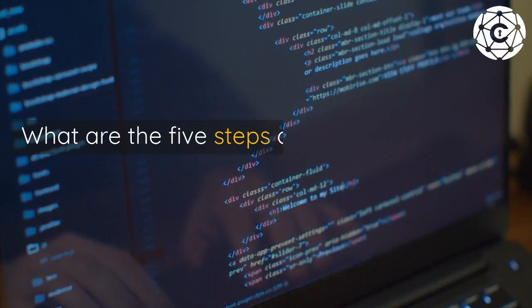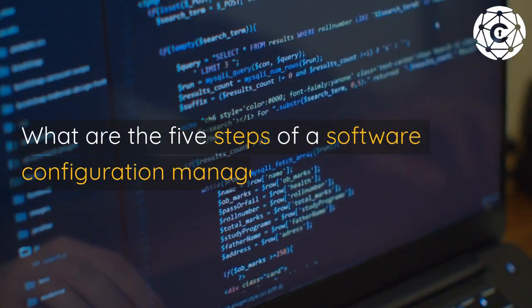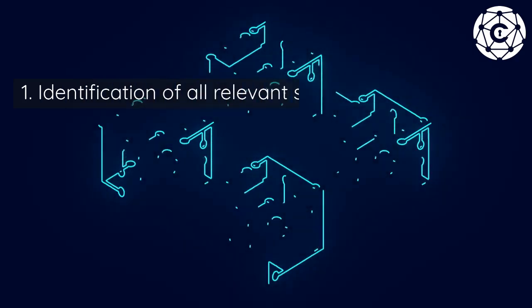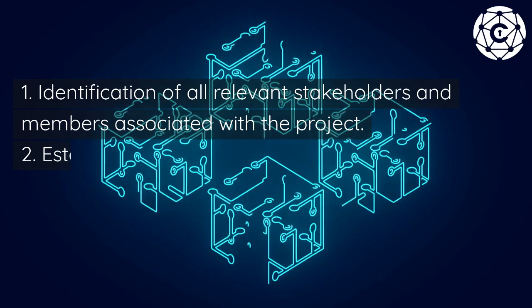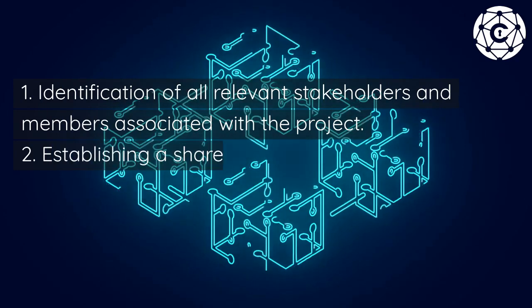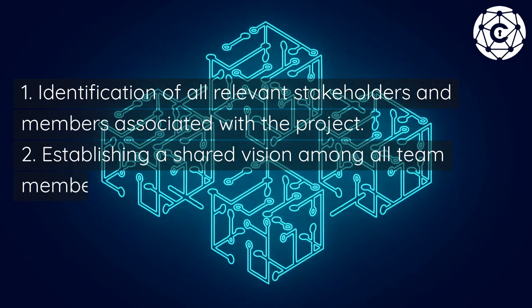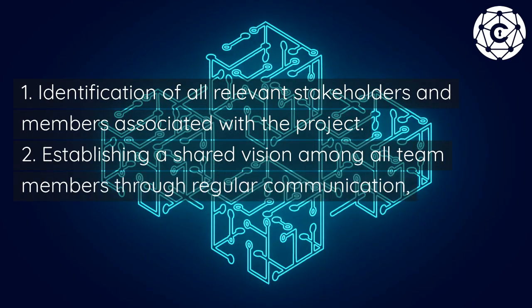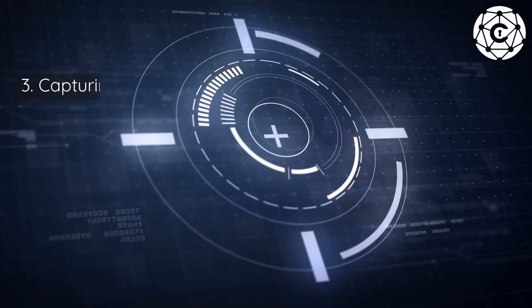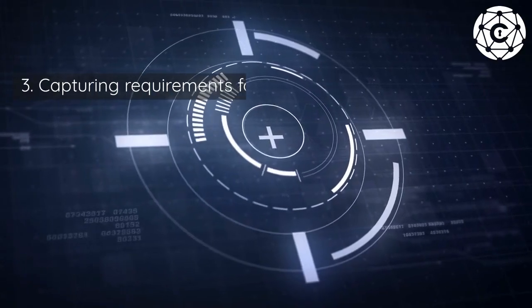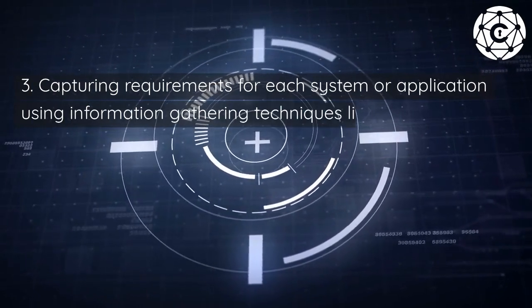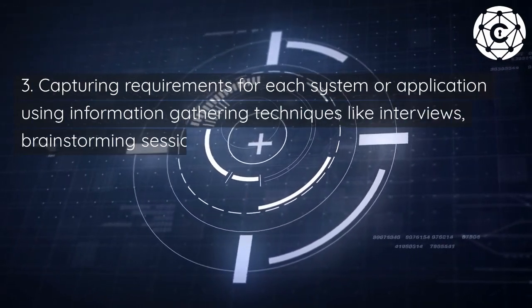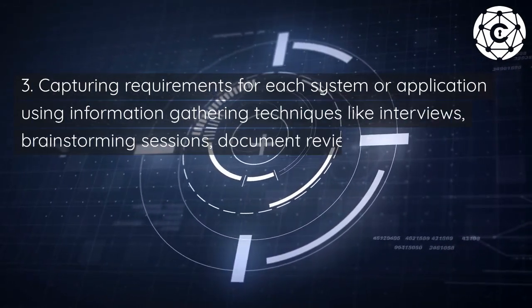What are the five steps of a software configuration management process? Step 1: Identification of all relevant stakeholders and members associated with the project. Step 2: Establishing a shared vision among all team members through regular communication, collaboration, etc. Step 3: Capturing requirements for each system or application using information-gathering techniques like interviews, brainstorming sessions, document reviews, etc.